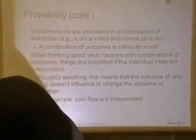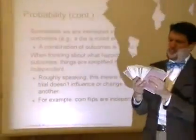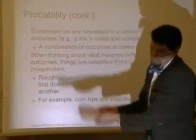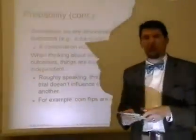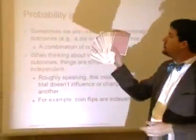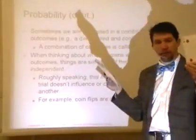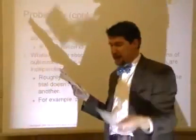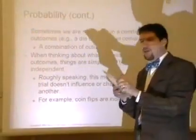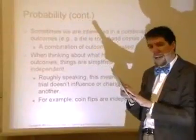Let's talk about the probability of drawing a king using giant cards. After shuffling, the probability of drawing a king is 4 out of 52. We drew a card and got a four. Now, setting that card aside, what's the probability of drawing a king? It's now 4 out of 51, and the probability has changed.